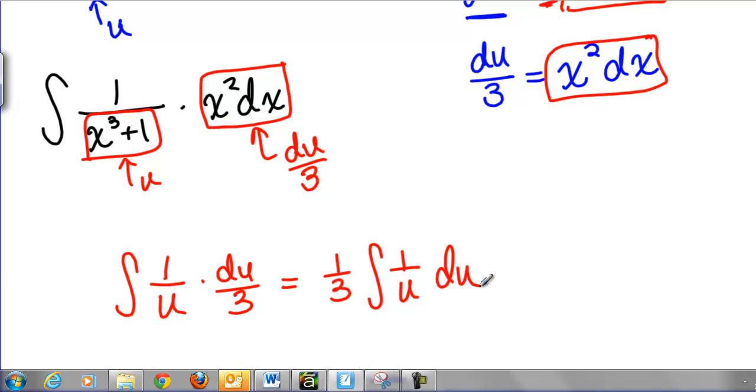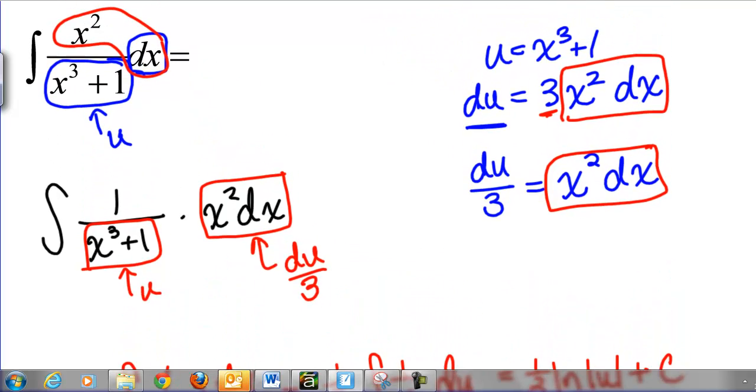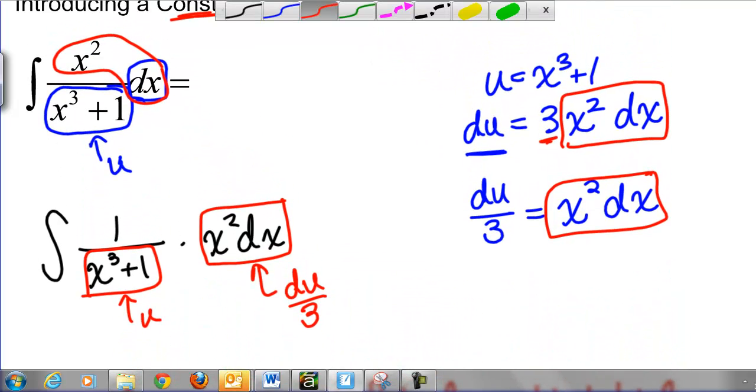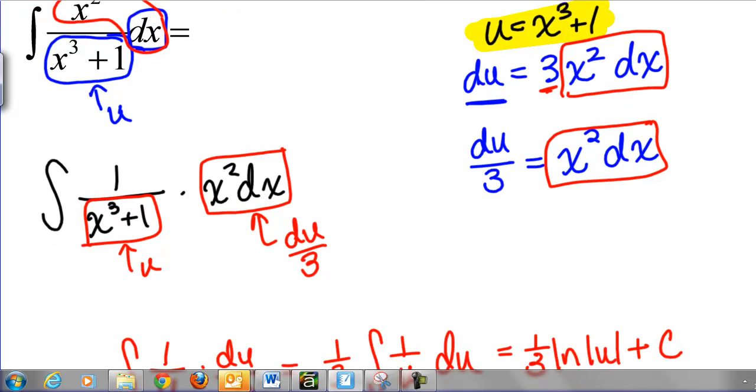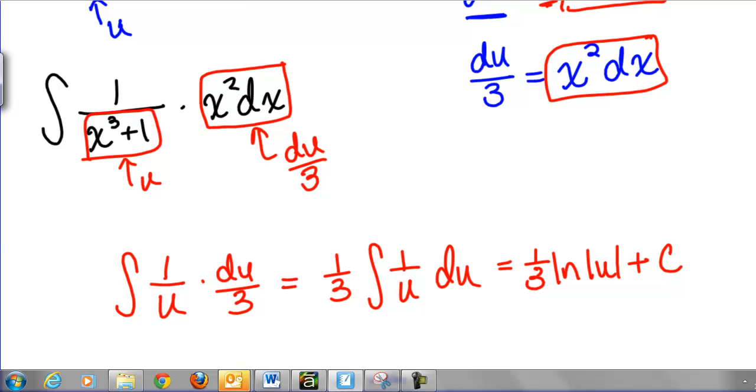Now again we've gotten down to a function that we know how to take the antiderivative of. This is 1 third natural log of the absolute value of U plus C, and then we go back to X's. We go back to our original relationship, U equals X cubed plus 1, and I replace every U that I see with X cubed plus 1. My final answer is then 1 third natural log of the absolute value of X cubed plus 1 plus C.